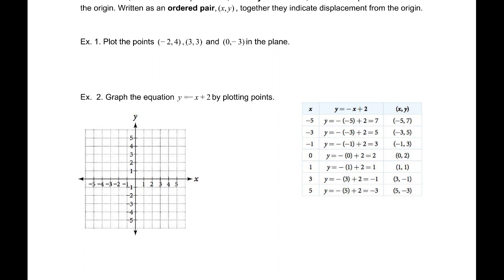(-5, 7) would be 5 to the left and up 7. And that is just off this graph. Let's go ahead and say 7 is right there. (-3, 5). (-1, 3). (0, 2), (1, 1). (3, -1), and (5, -3).